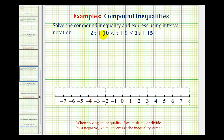We want to solve the compound inequality and express it using interval notation. Looking at the given compound inequality, notice how it looks like we've combined two inequalities into one because it contains two inequality symbols. The key is to look at the middle expression of x plus nine first. The expression x plus nine has two conditions: it must be greater than two x plus ten, and it must also be less than or equal to three x plus fifteen.